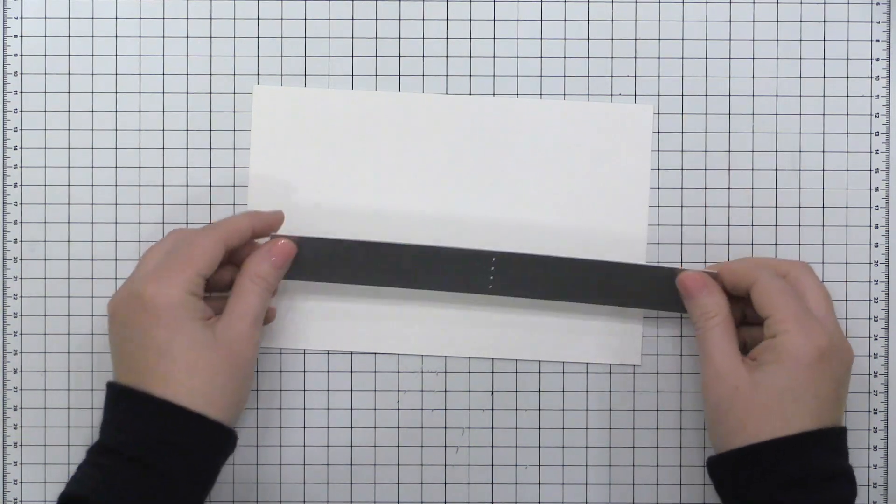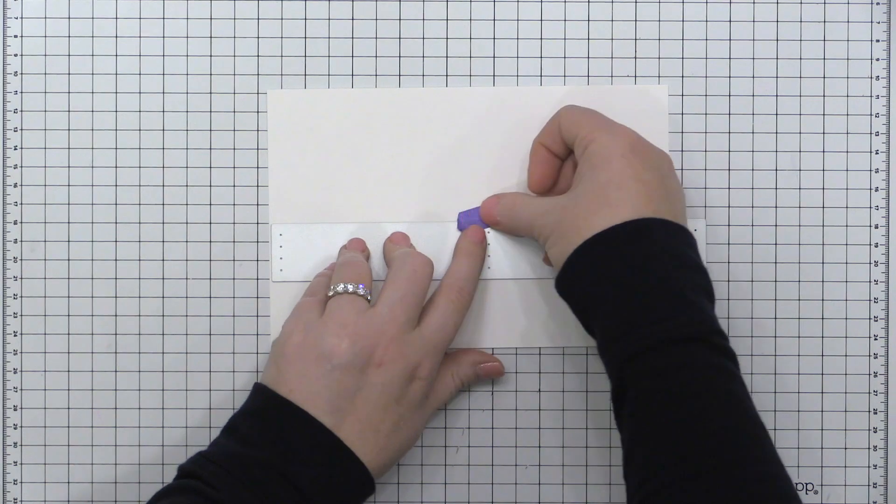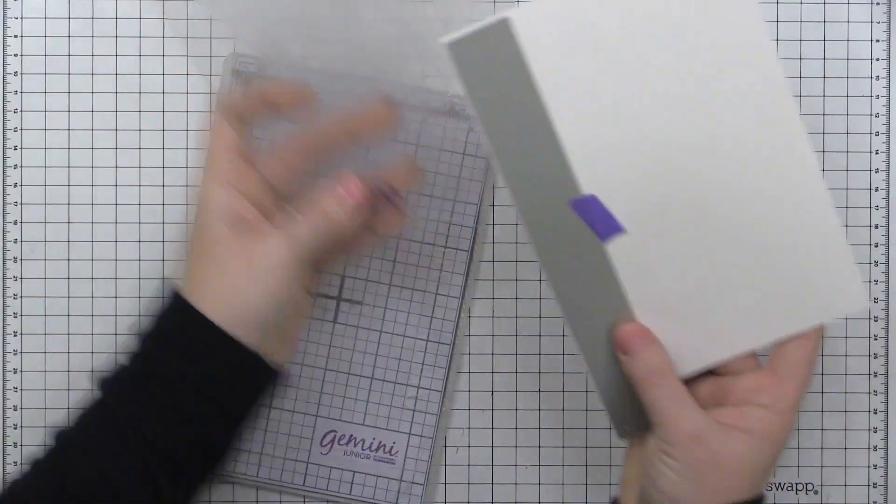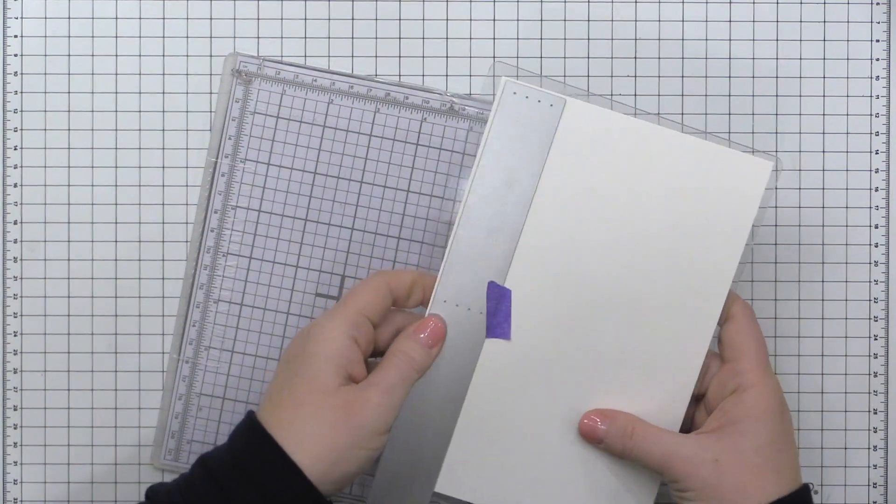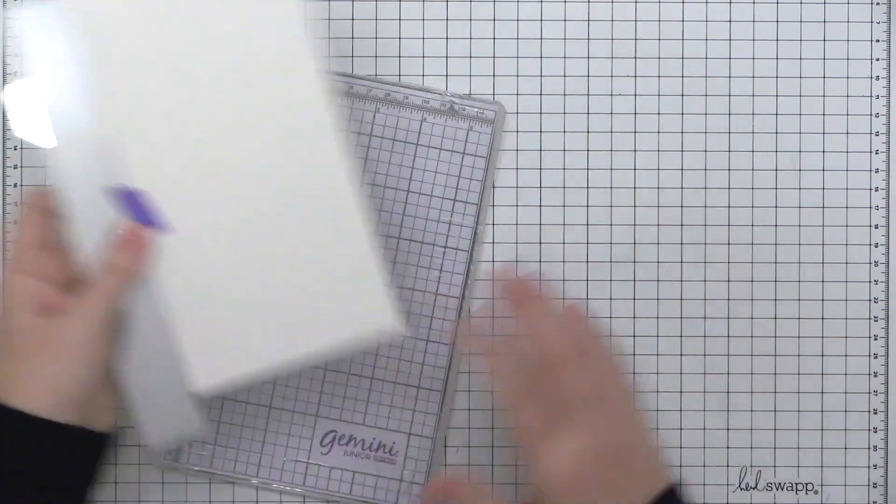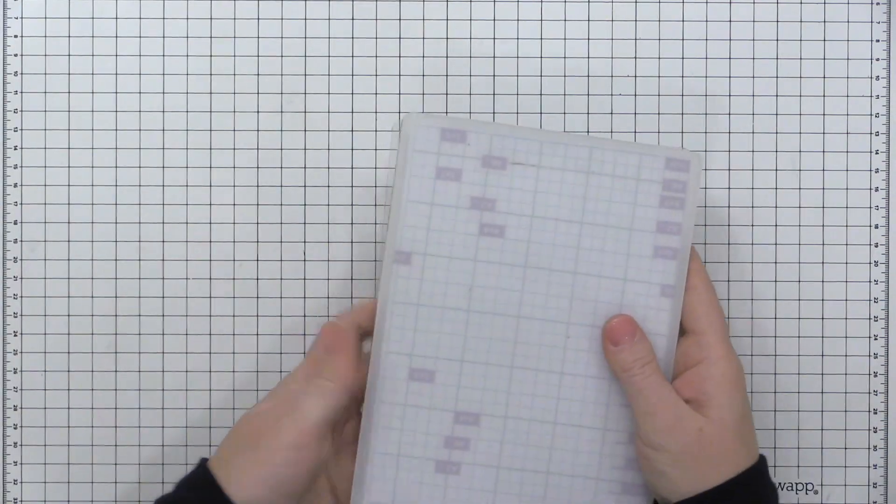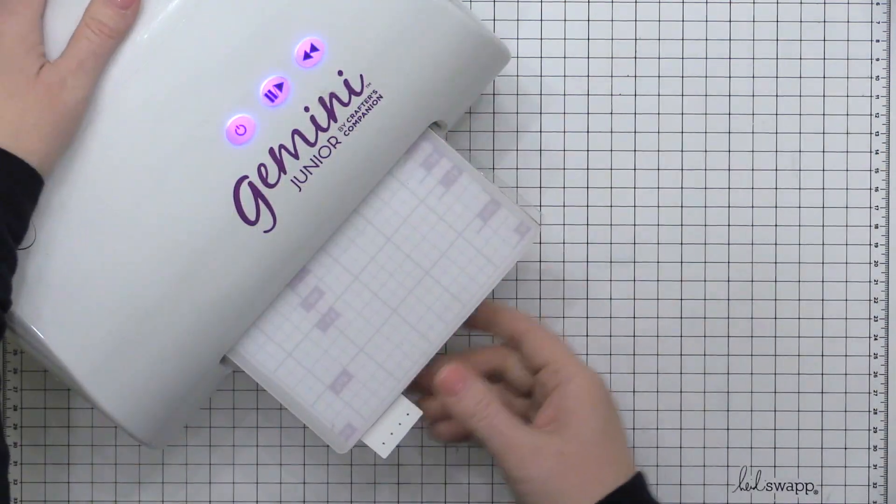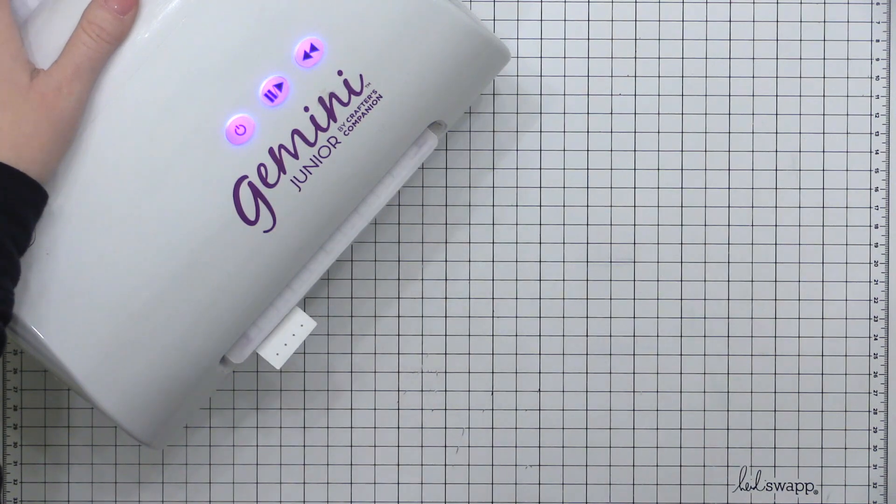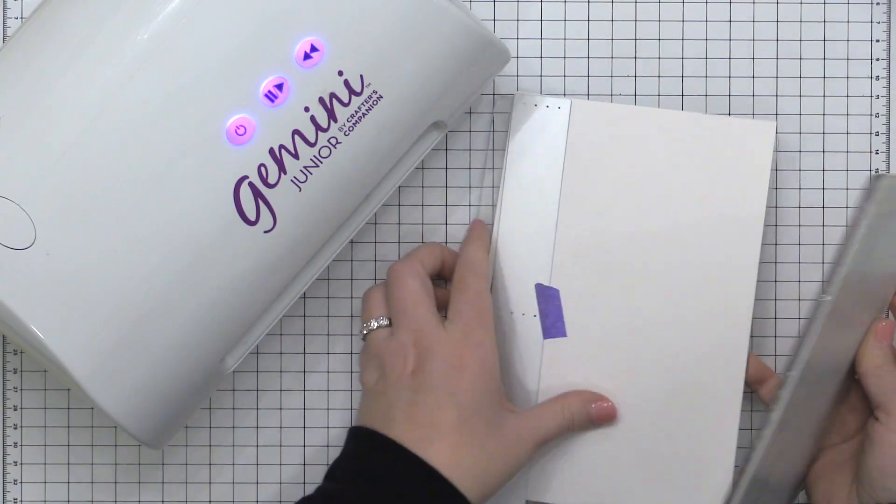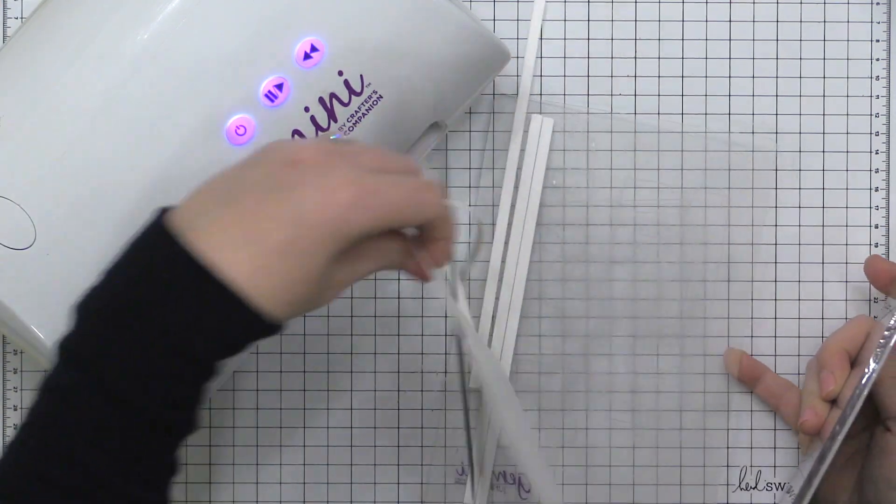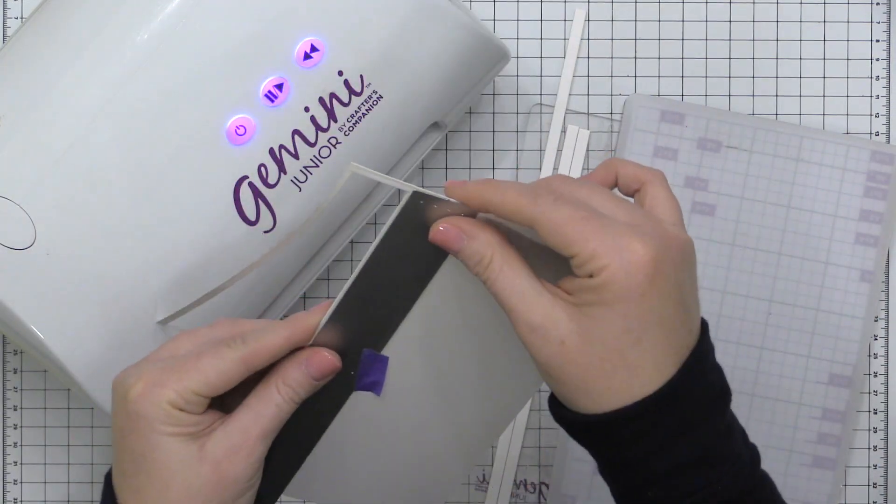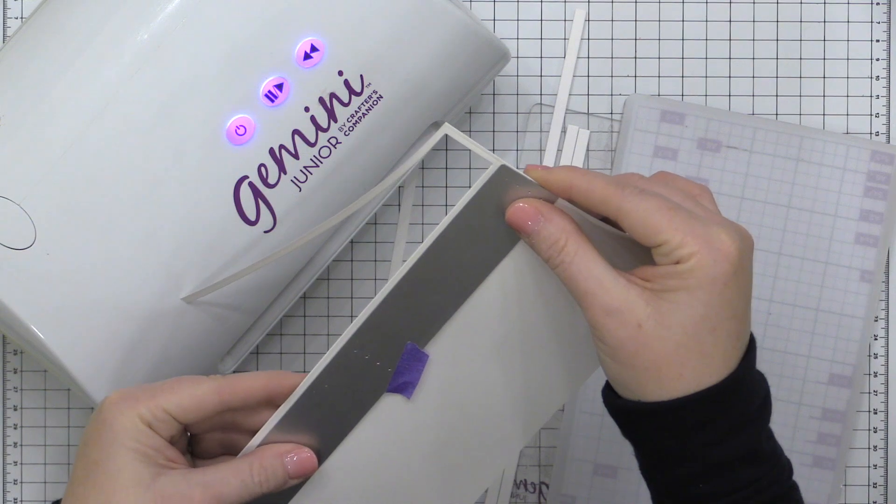So I'm going to do a little bit of paper stripping and I'm going to use the slim stripes die from Pinkfresh Studio. This is the one that cuts the medium size strips and I'm going to run it through my Gemini Junior using just some plain white cardstock. We're going to use the inks to add color to these cardstocks and this is a great way to get a little more mileage out of your white cardstock and not have a ton of different colored cardstocks on hand.